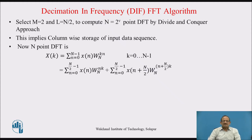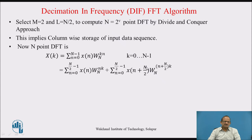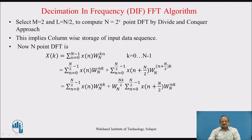Now this can be written in terms of the first N/2 points and second N/2 points of the input sequence. So summation n=0 to N/2 minus 1 of x(n) W_N^(kn), plus using n=0 to N/2 minus 1 with x now being n plus N/2, which gives the second 50% of the sequence x(n). So n is replaced by n plus N/2, giving W_N^((n + N/2)k), where the summation runs from k=0 to N/2 minus 1.